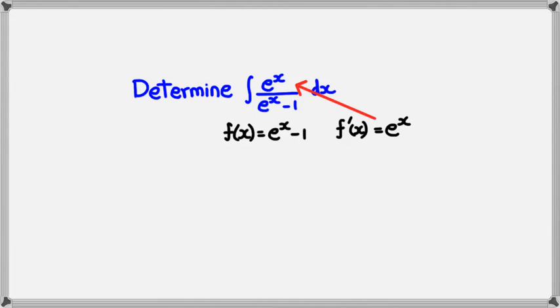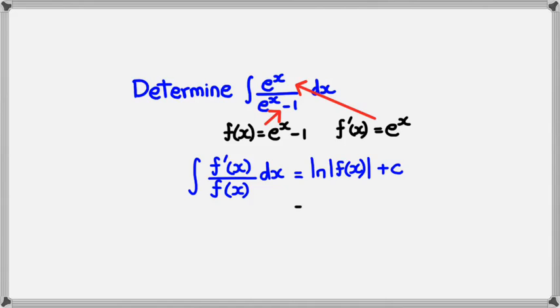Before I do that I just want to show you, e of x in the numerator and e of x minus 1 in the denominator. Putting this in the formula, you can see that it's just ln of f of x. So our answer for this when we integrate e of x divided by e of x minus 1 would be ln of absolute value of e of x minus 1 plus c.